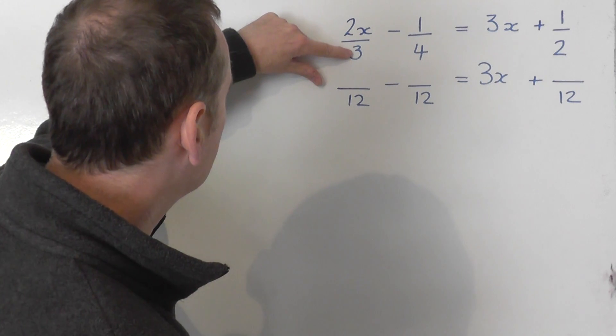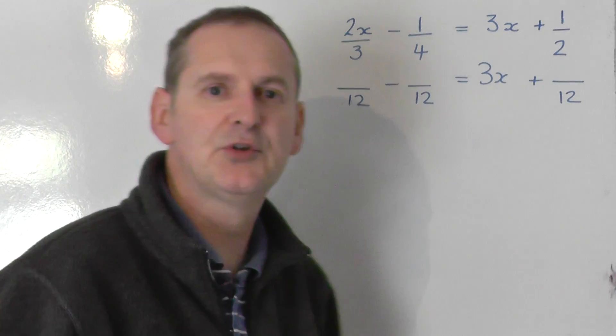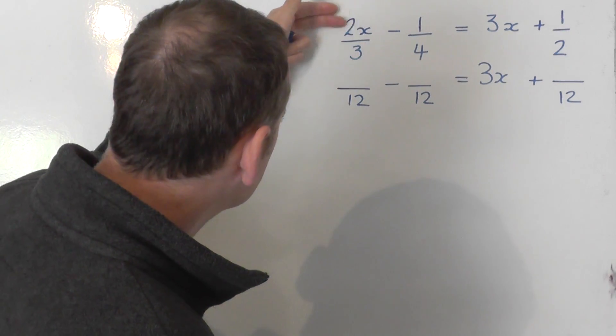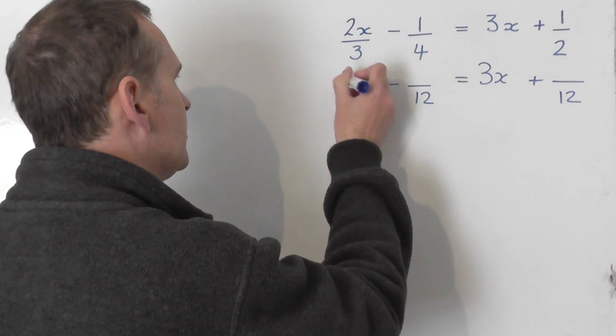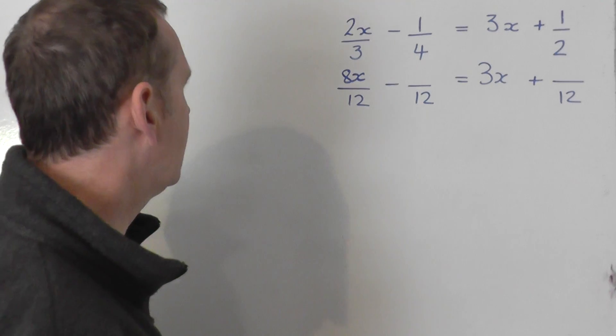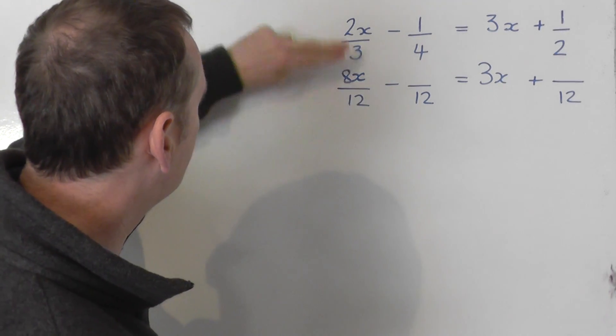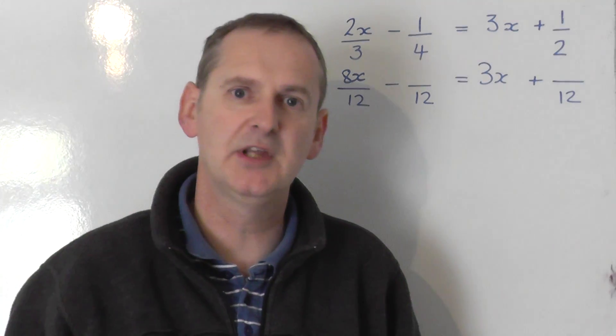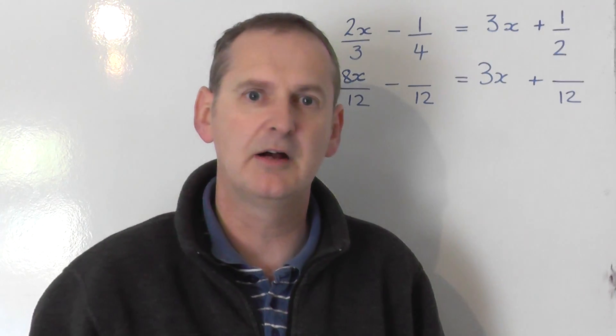OK, so what do I do to 3 to turn it into 12 when I multiply it by 4? So to keep this fraction the same, I've got to times the top by 4. So 2x times 4 is 8x. So I've times the bottom by 4, times the top by 4. That is the same thing. It looks different, but it's the same thing. Just like 2 quarters is the same as a half.